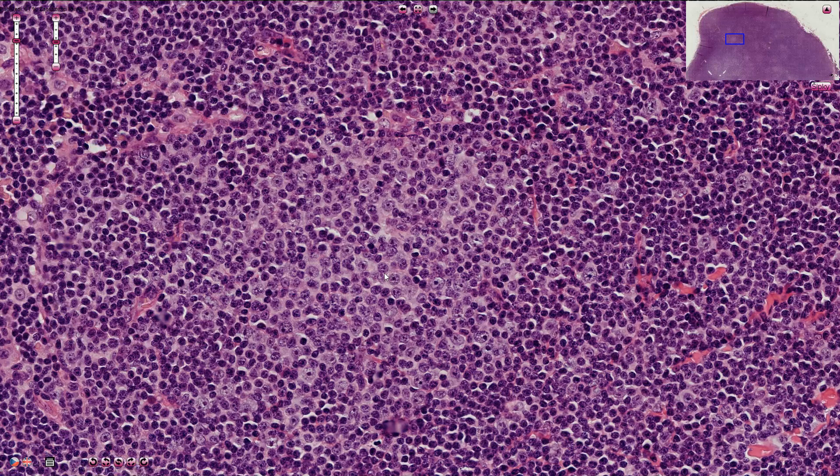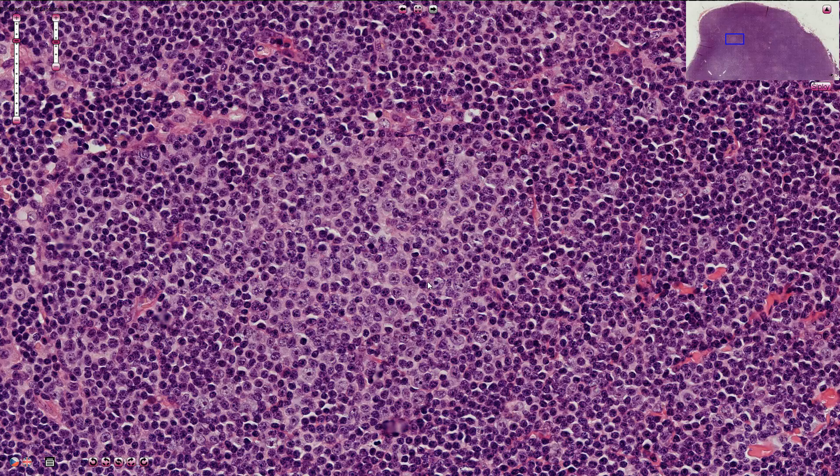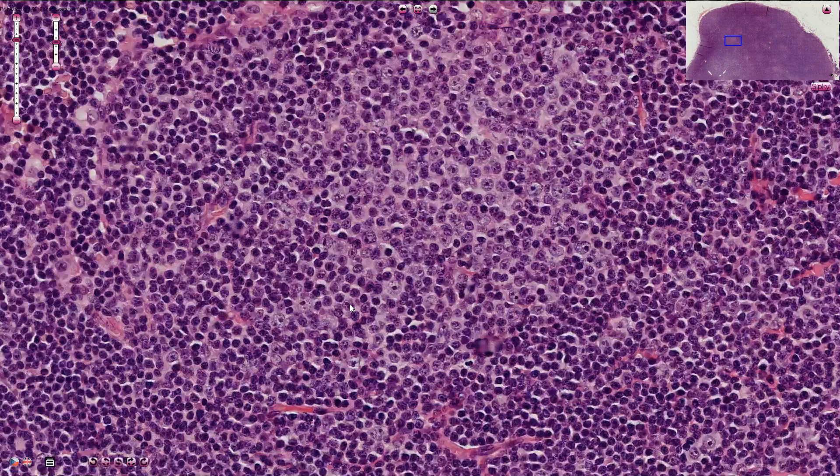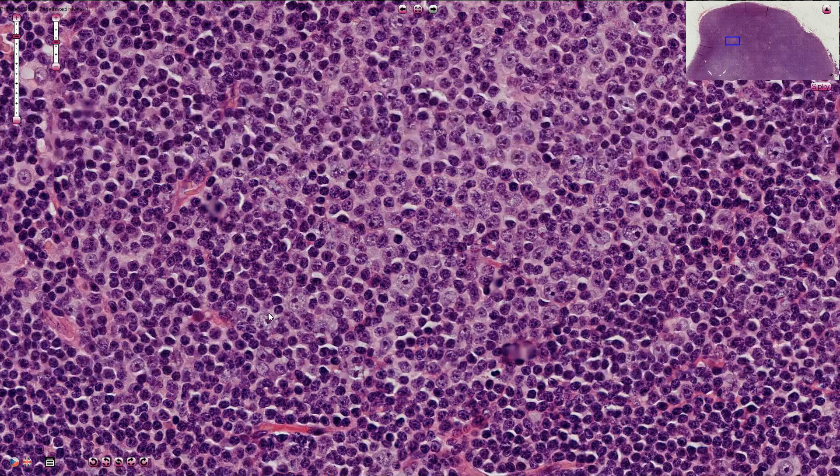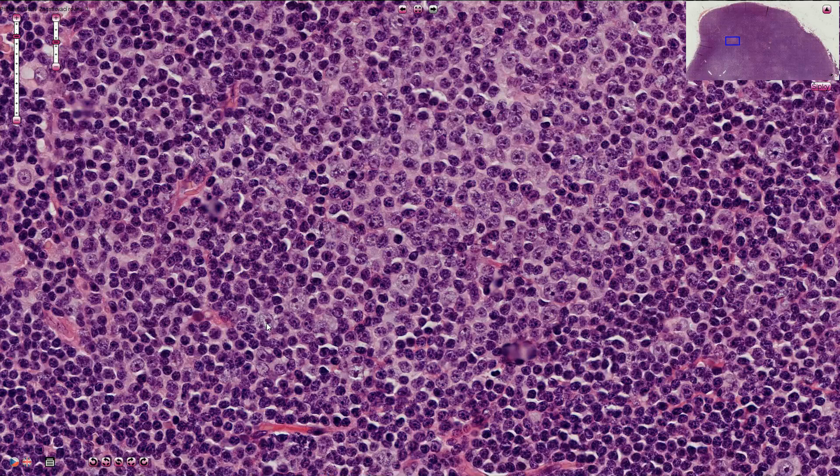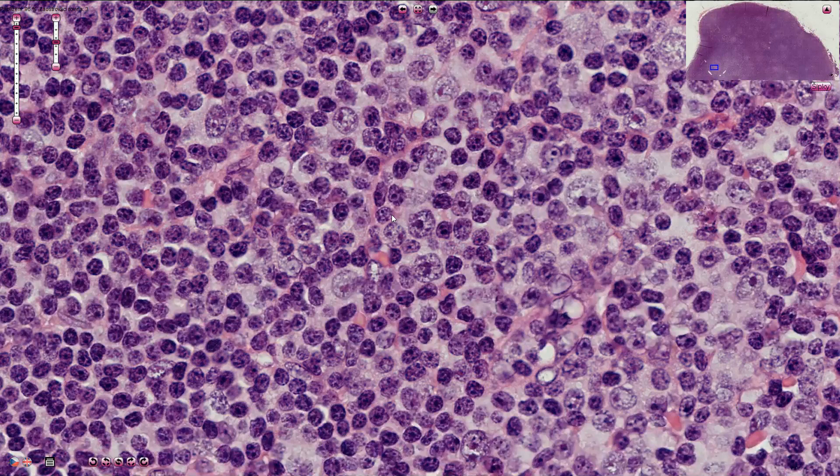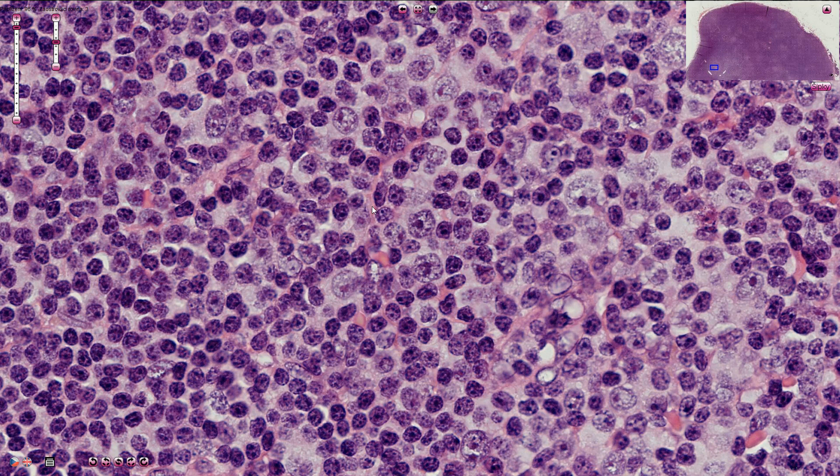These cells with central dark nuclei are called prolymphocytes, and we also have other types of cells with slightly larger central eosinophilic nucleoli, and those are called para-immunoblasts. Here we have another detail of a proliferation center. So these cells are called prolymphocytes, and the larger cells with eosinophilic centrally located nucleoli, those are para-immunoblasts.